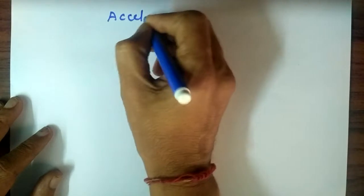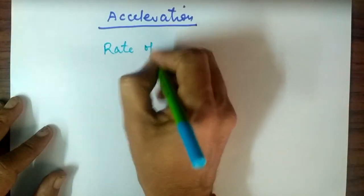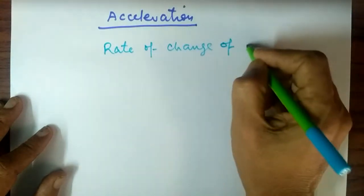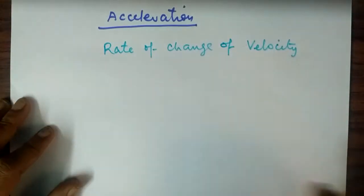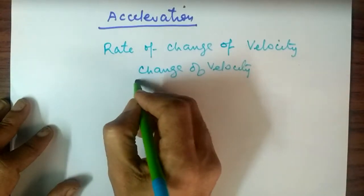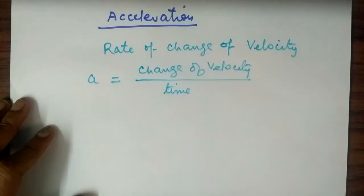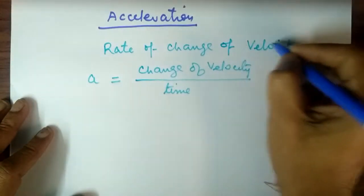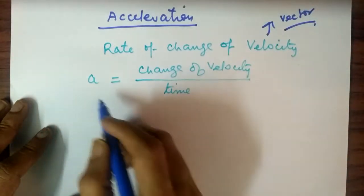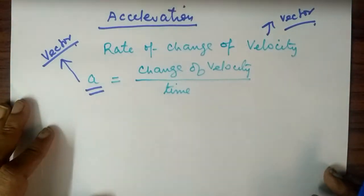Now we take the example of acceleration. Acceleration is the rate of change of velocity — change of velocity with respect to time. This is represented by A. As we have studied, velocity is a vector quantity. A vector quantity is one in which direction is also taken into consideration along with magnitude.